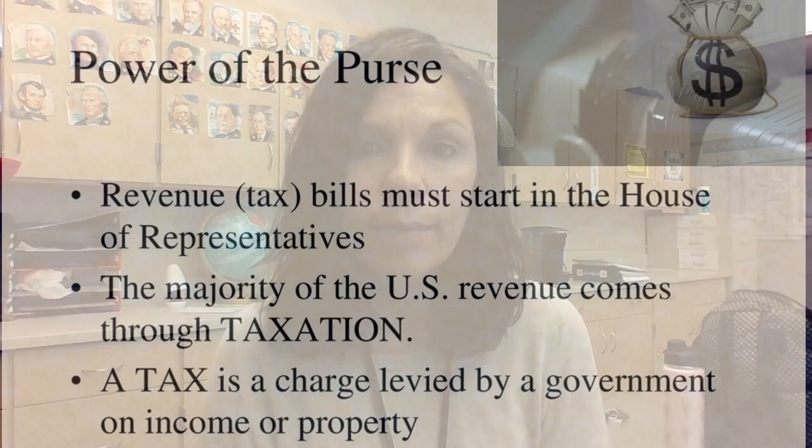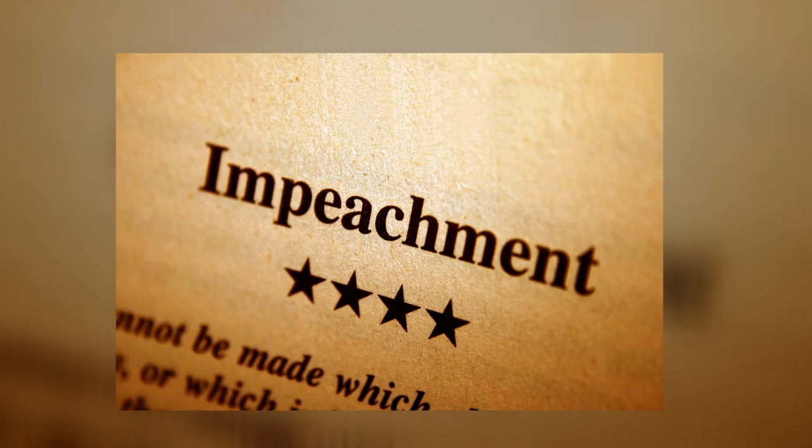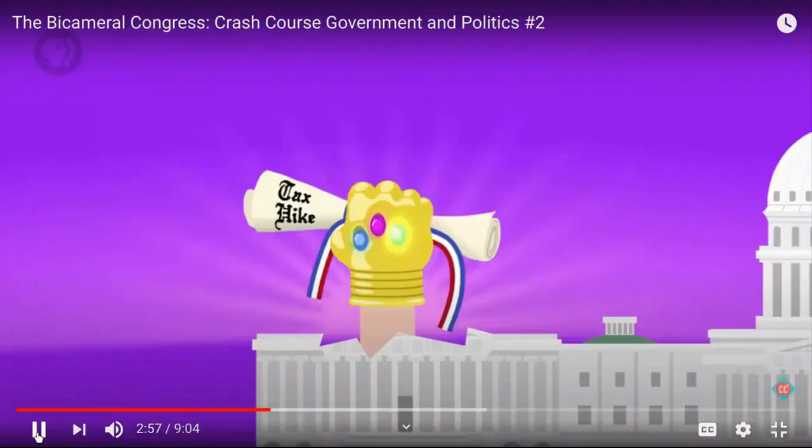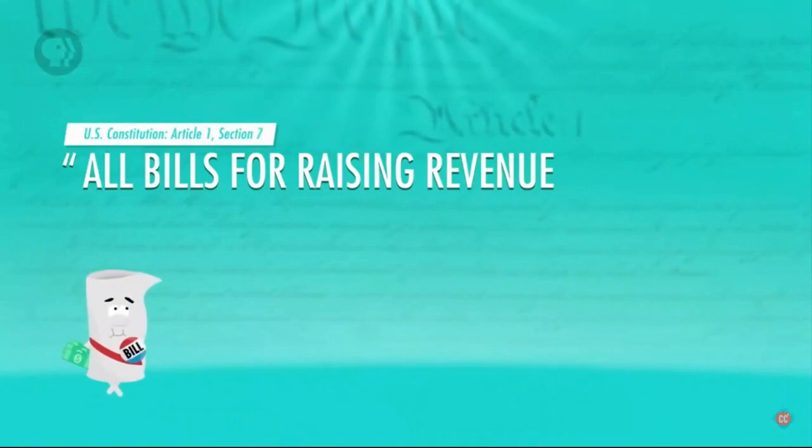We're going to talk more about the powers of the House of Representatives next week, but today I want to talk about two unique powers that only the House has over the Senate. Those include: all bills raising revenue must start with them — otherwise known as the power of the purse — and the second is the power of impeachment. All articles of impeachment must begin in the House of Representatives. Article I, Section 7 states: all bills for raising revenue shall originate in the House of Representatives. This is huge because any bill that raises taxes starts in the House.